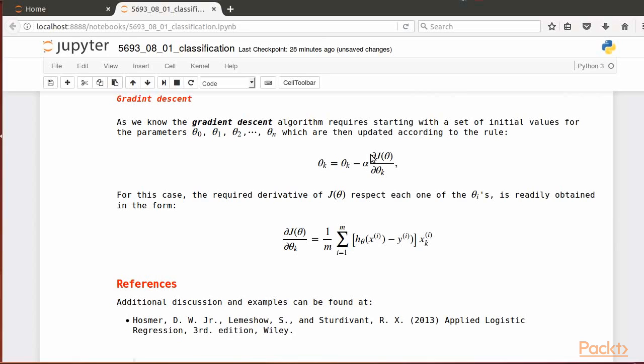We've already implemented it in the previous section in the context of linear regression. As we've seen in the examples given in that section, we need to use a proper choice of learning rate alpha to get our implementation to converge to the minimizing values.